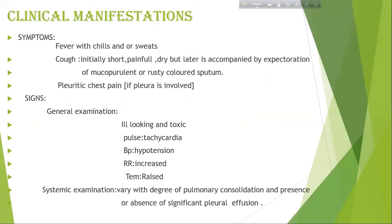Signs. General examination: Ill-looking and toxic. Pulse may be raised. Blood pressure may show hypotension. Respiratory rate may be increased. Temperature raised. Systemic examination varies with the degree of pulmonary consolidation and presence or absence of significant pleural effusion.